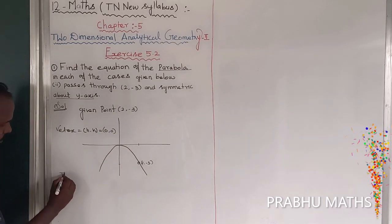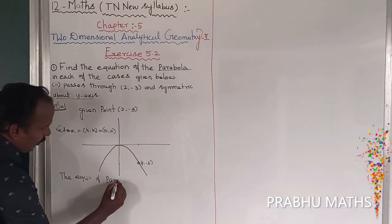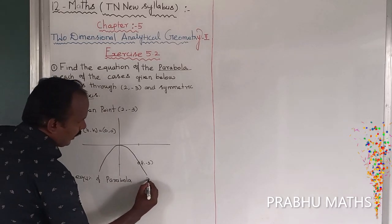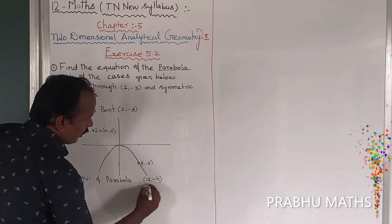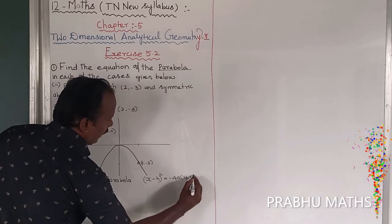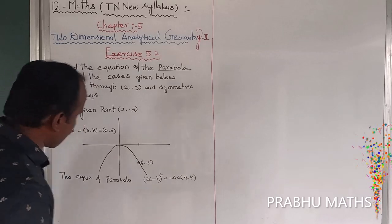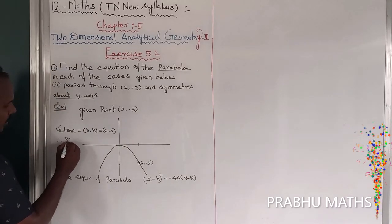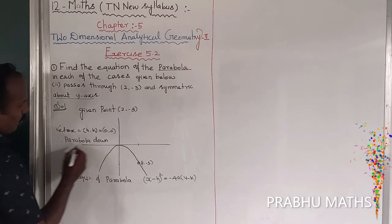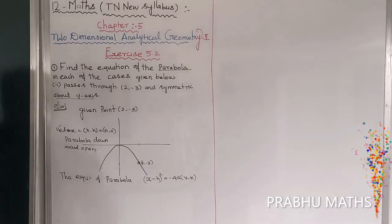So next, passing through the point — the general form of the parabola. The equation of parabola: (x minus h) whole square is equal to minus 4a into (y minus k). That is the form of a downward open parabola.